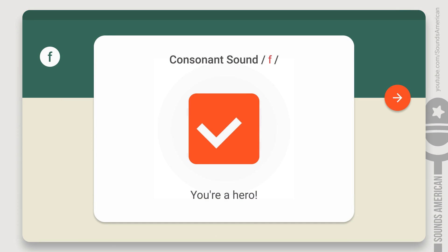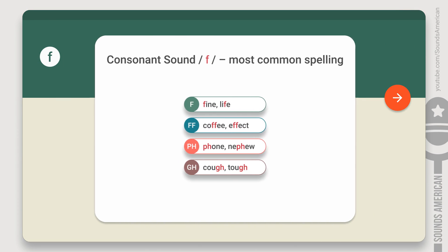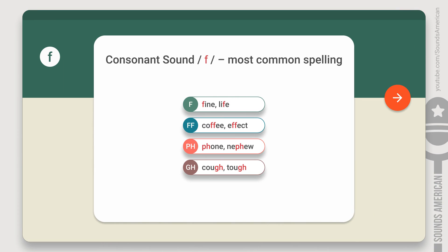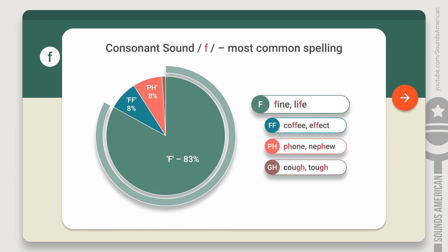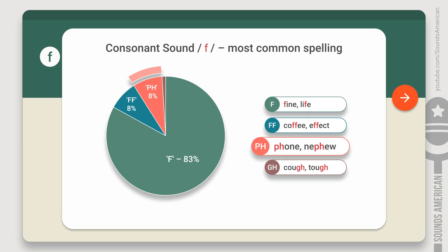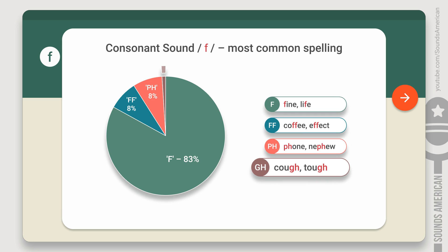You're done! Congratulations! Did you know that the F sound is not always represented by the letter F? It's written as the letter F, or two letters FF, 91% of the time. But in the remaining 9% of words with this sound, it's written with the PH combination, as in phone, and with the GH combination, as in cough or tough. Remarkable, right?